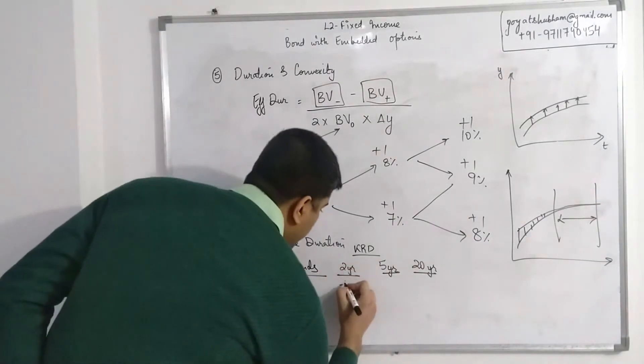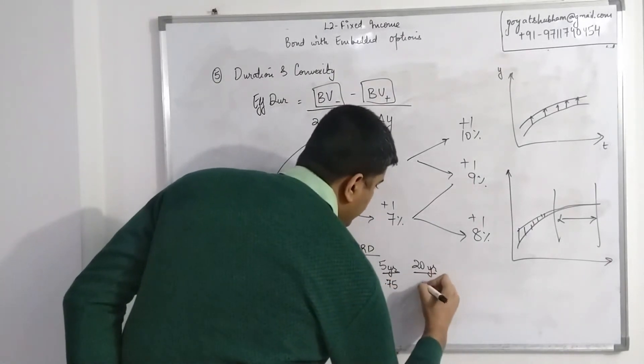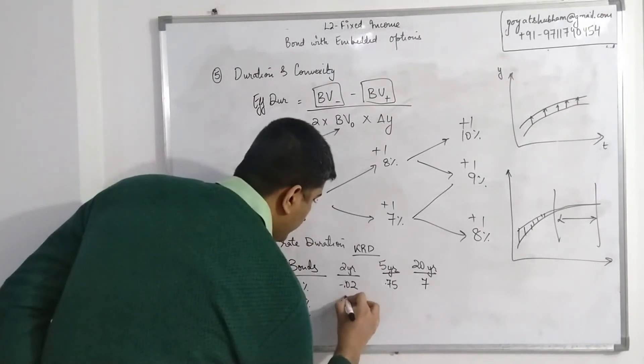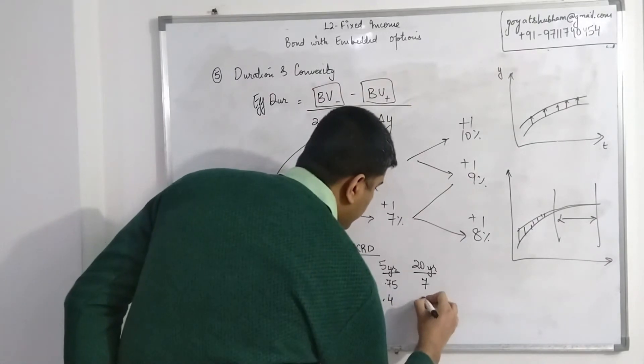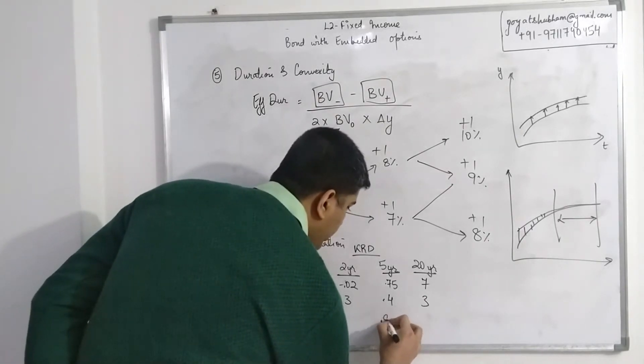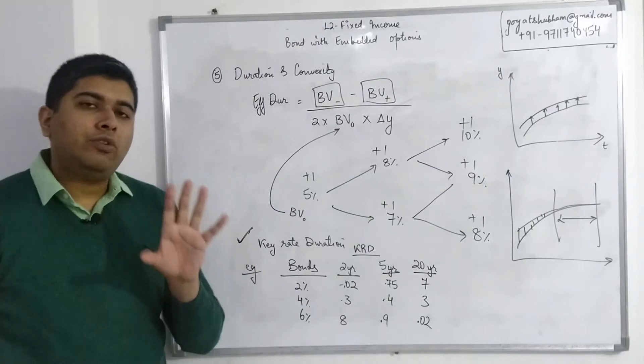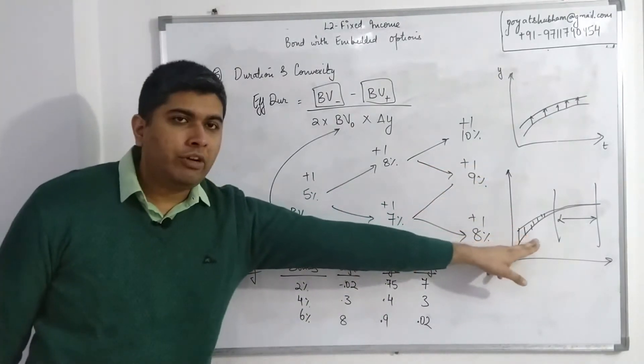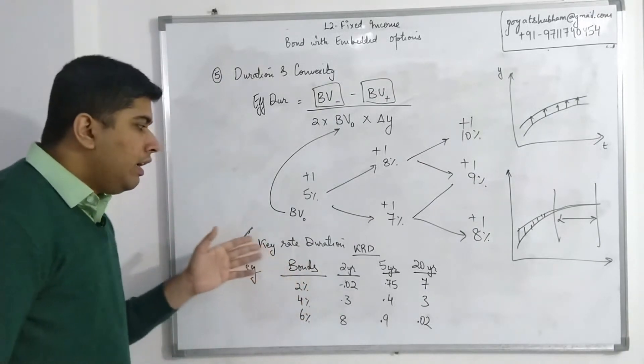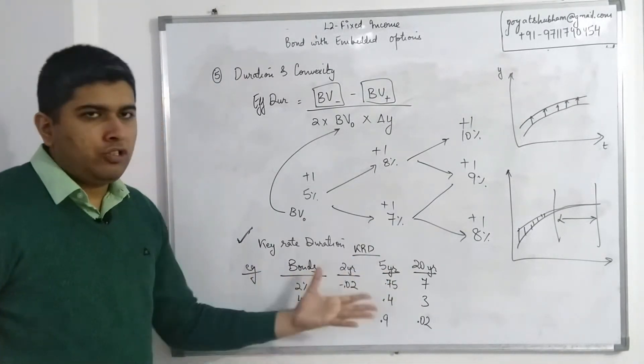Then the question would give you some information. Let's say -0.02, this might be 0.75, and let's say this is 7. Then 0.3, 0.4, and 3. And over here we have let's say 8, 0.9, and 0.02. So you could get information like this for key rate duration. Knowing the meaning is very important—what it represents, what kind of duration it is. It is a partial duration or one-sided duration, which means it's covering the non-parallel shift of the term structure.